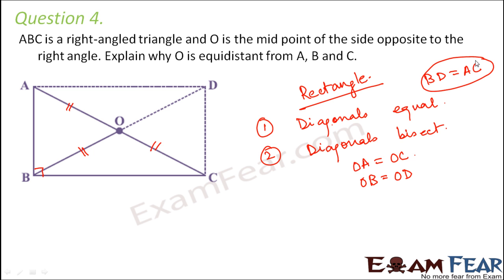And when we say that diagonals are equal, that means BD will be equal to AC. Now considering this as well as this relation, we can very easily prove that OA is equal to OB is equal to OC.